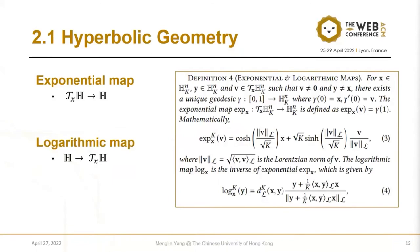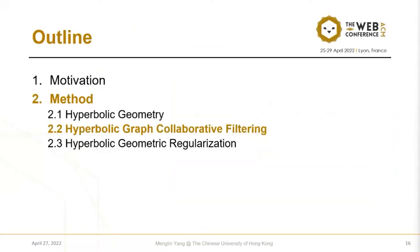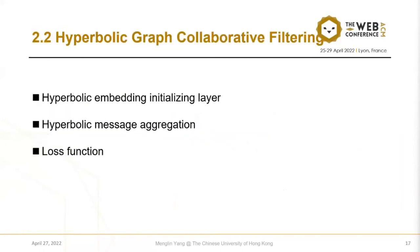To project from the tangent space to the hyperbolic space, we use the exponential map. To project from the hyperbolic space back to the tangent space, we use the logarithmic map. The hyperbolic graph collaborative filtering framework contains three parts: a hyperbolic embedding initialization layer, a hyperbolic message aggregation step, and a loss function.